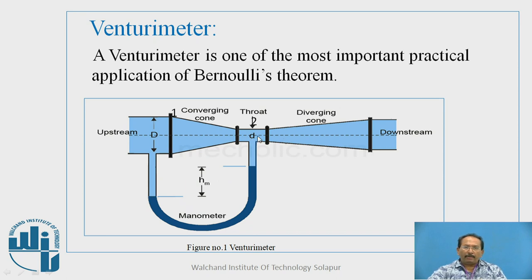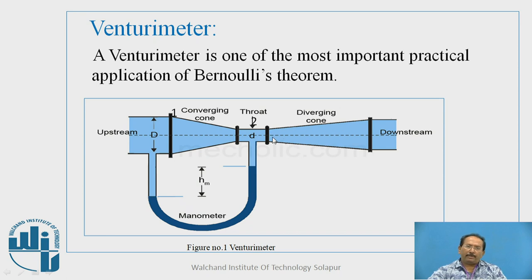One more thing you can observe in this figure: this particular length of the diverging cone is more — why? To avoid cavitation. As the cross-section is reduced, the velocity will be more and liquid can pass very fast, so there are chances of cavitation. That is why the length of the diverging cone is always more than the convergent cone.